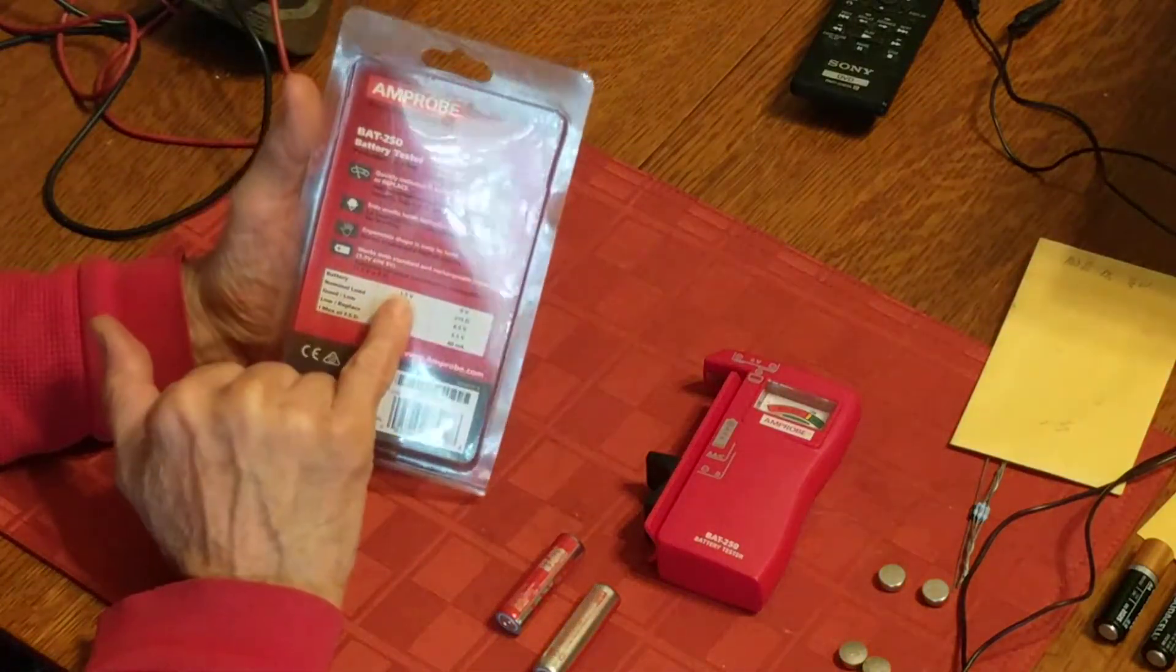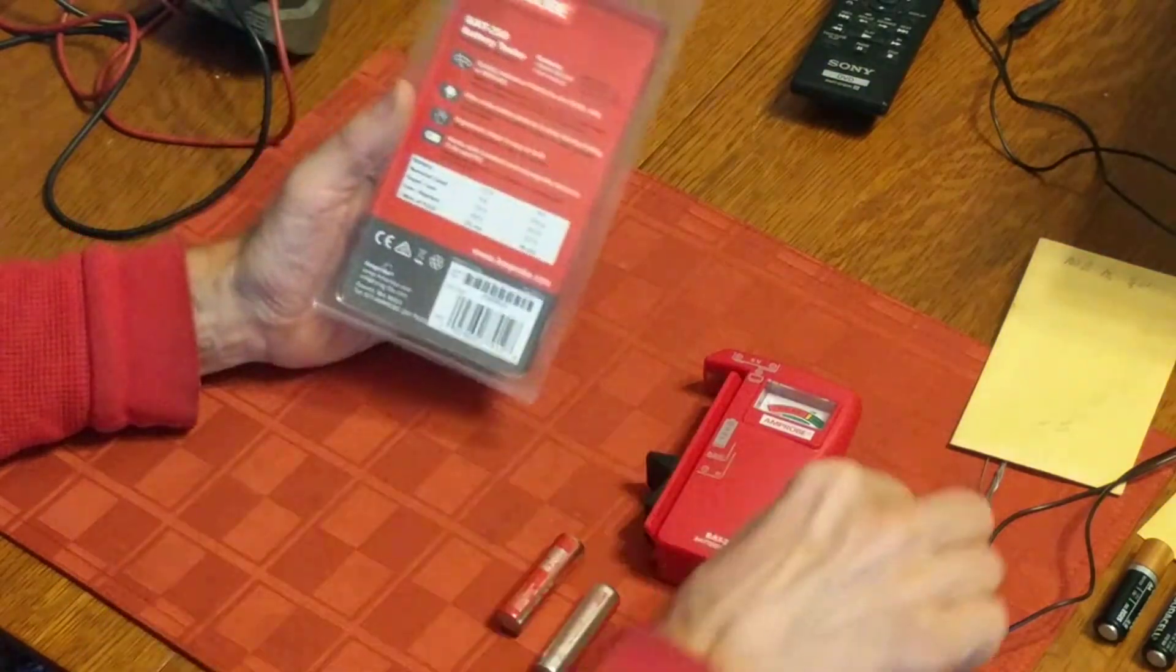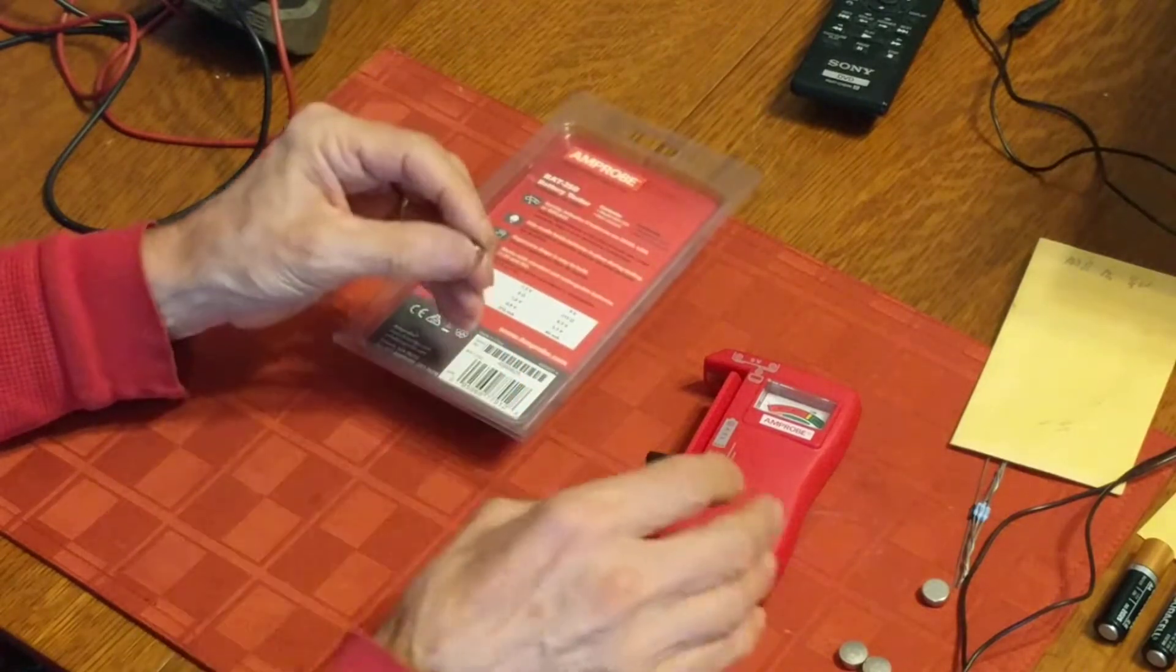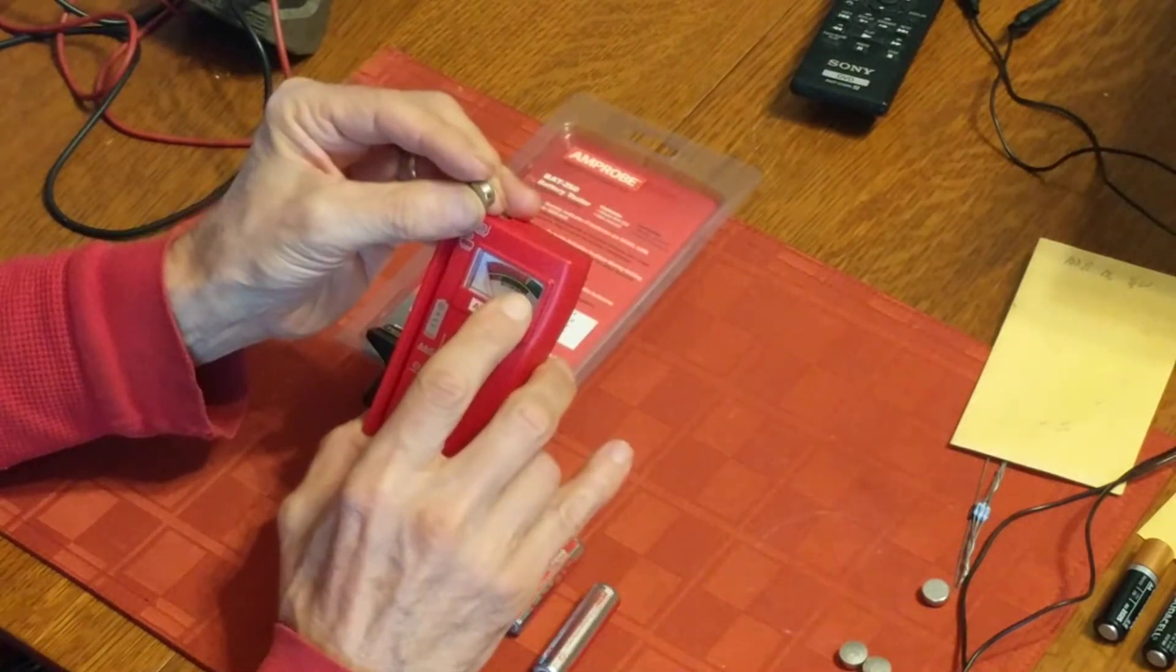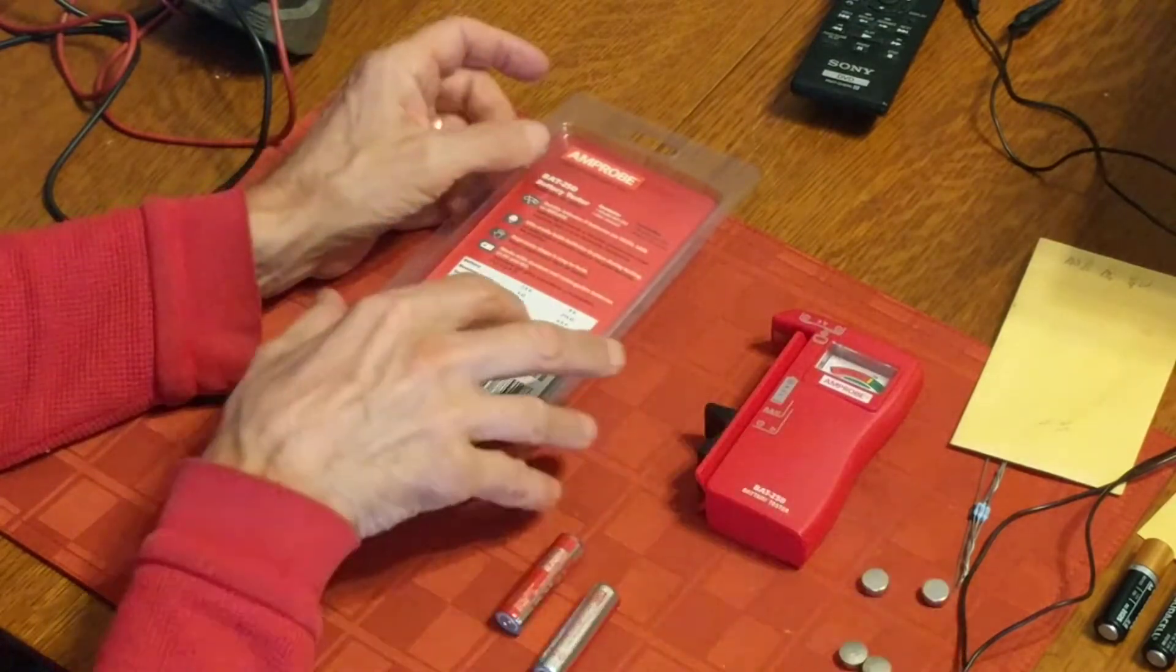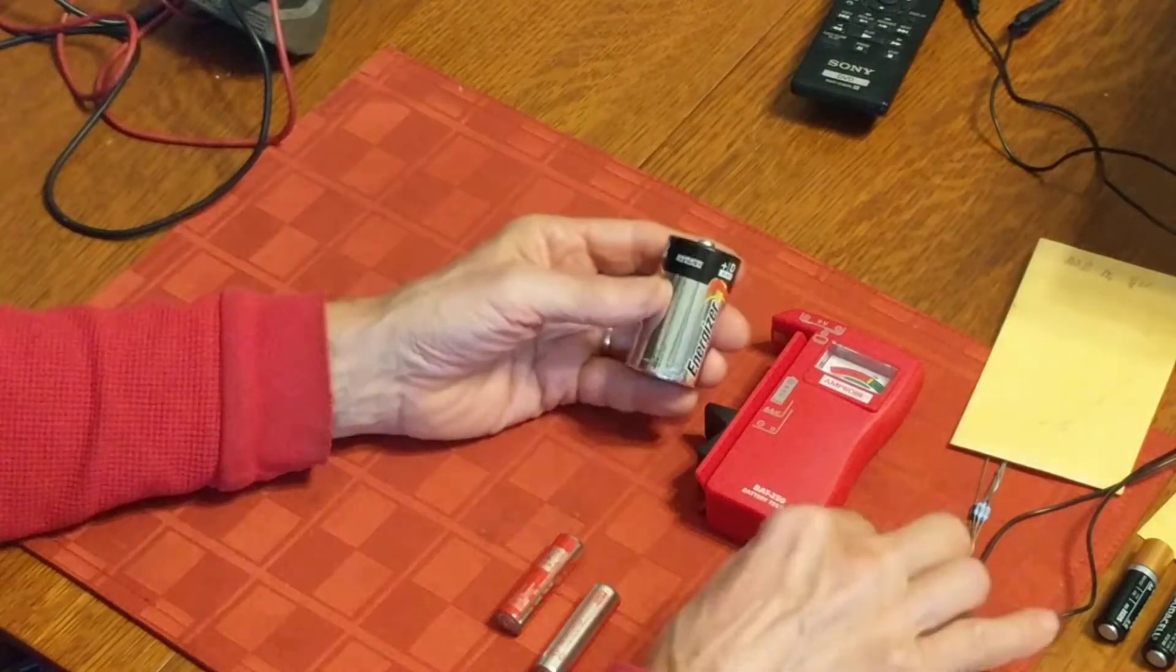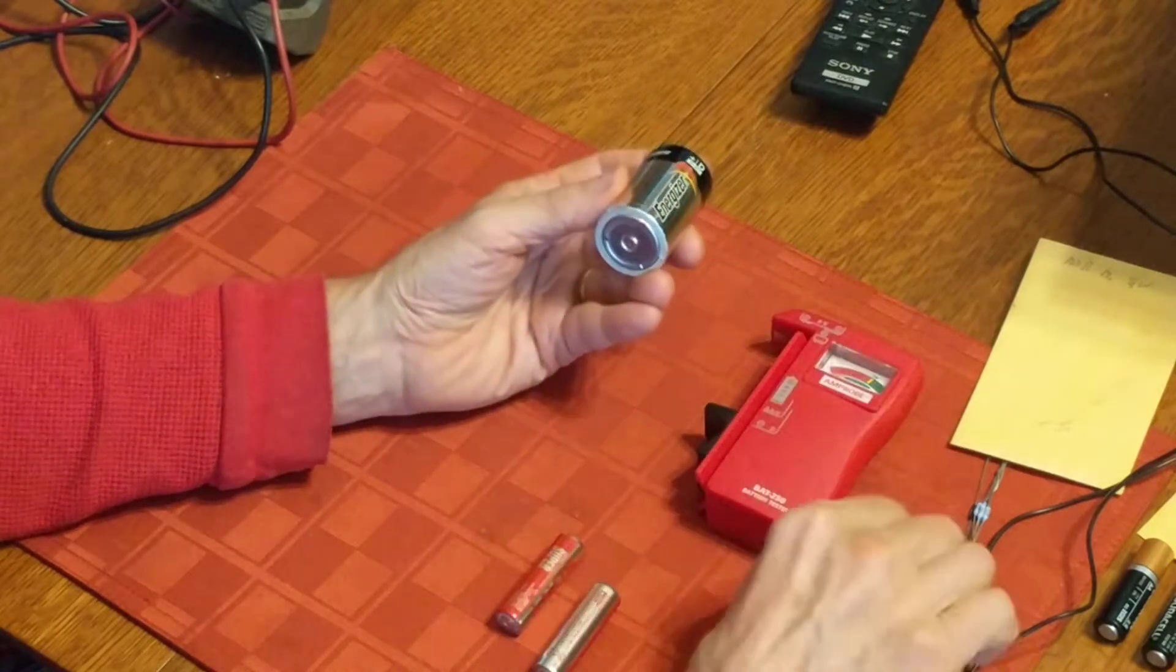With 1.5 volts, the four ohm resistance will draw 375 milliamps. One of the reviewers of this BAT-250 mentioned how when he was testing the button cells with it, they could be good but he could actually see the voltage just dropping as he was testing it. The load is quite large.